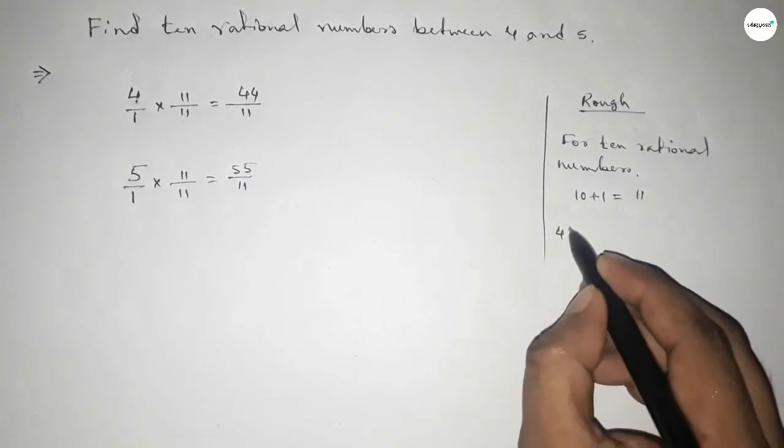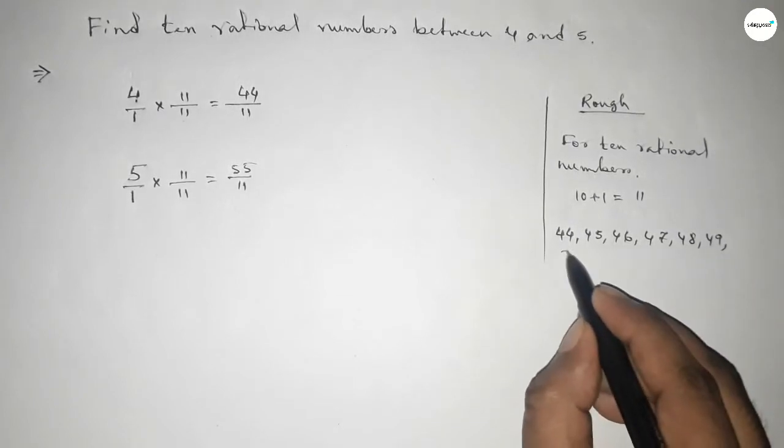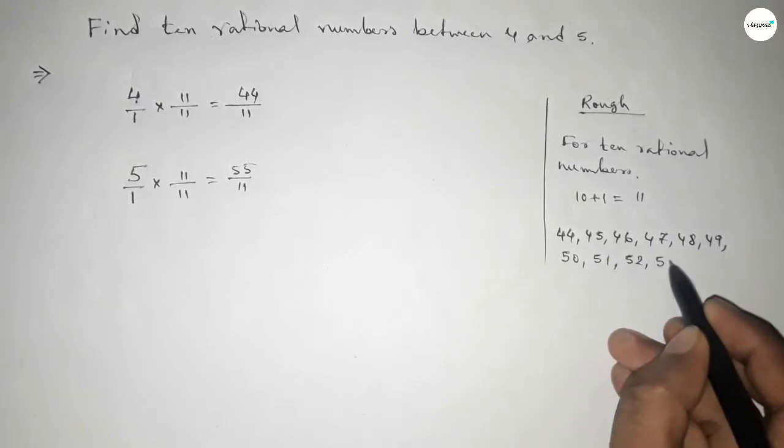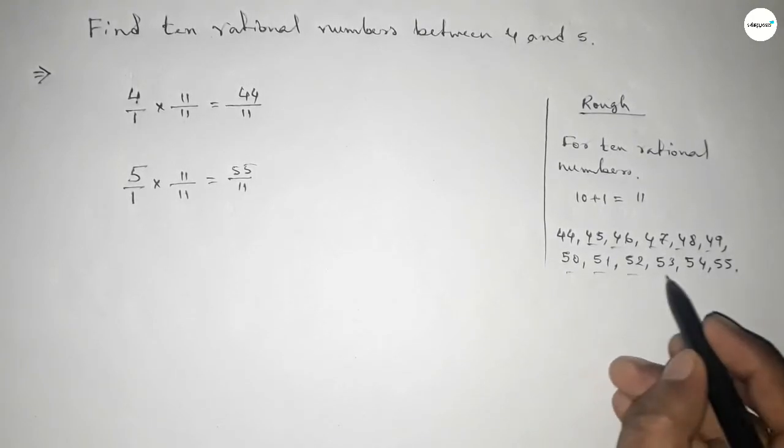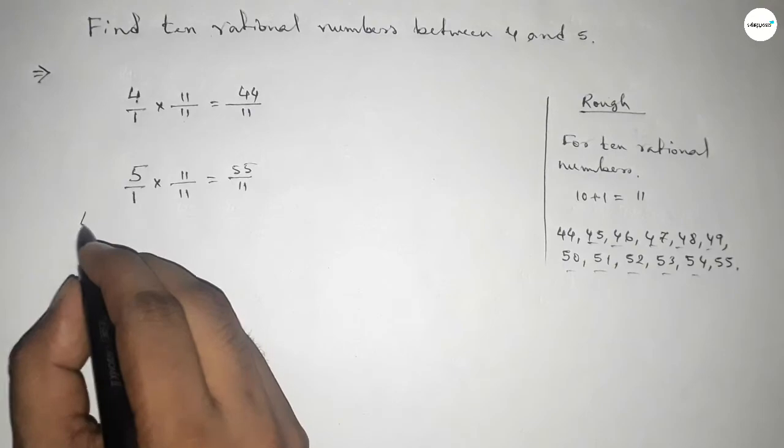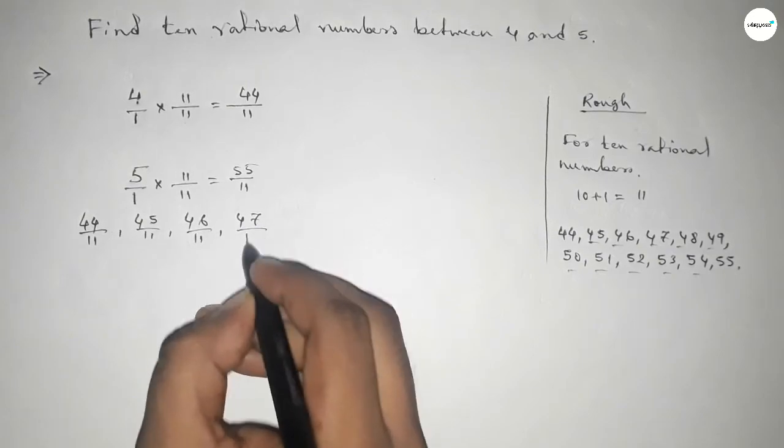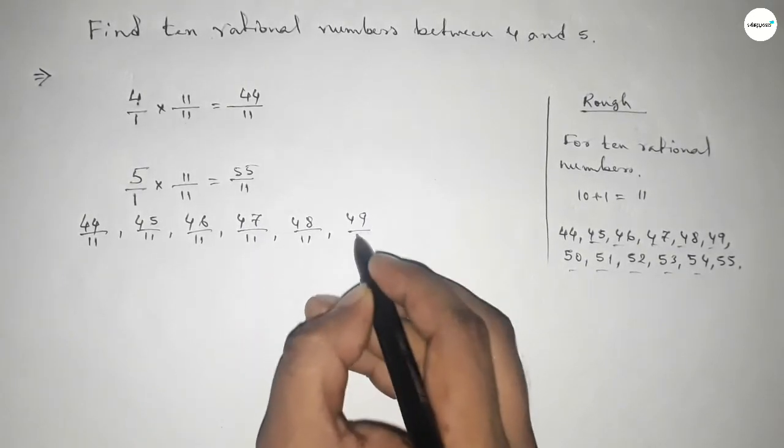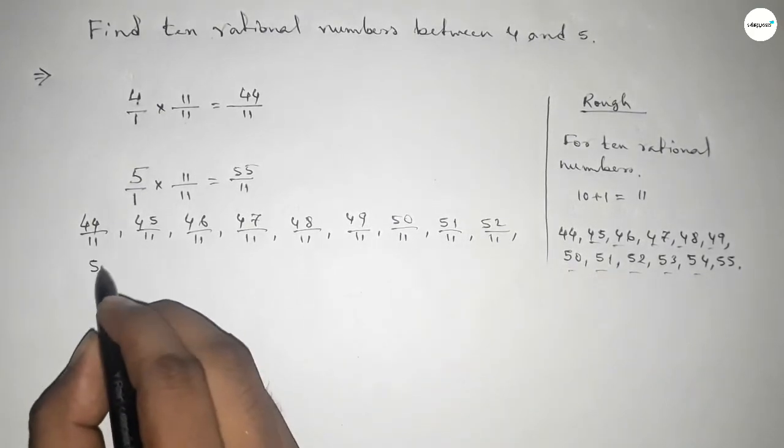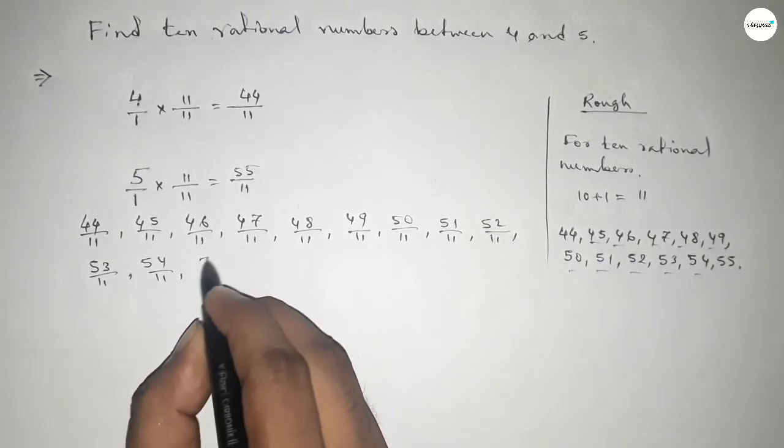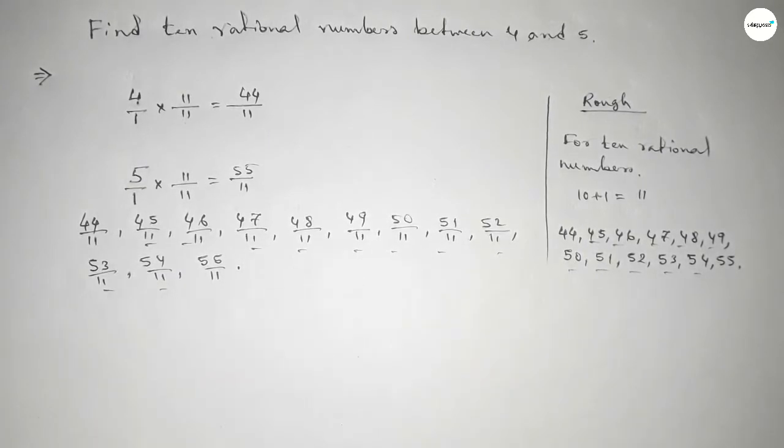Now between 44 to 55 we can find 10 natural numbers, and by these natural numbers we can form 10 rational numbers. Okay, now forming all the rational numbers here. So 44 over 11, 45 over 11, 46 over 11, 47 over 11, up to 55 over 11. And these are the required 10 rational numbers between 4 and 5.